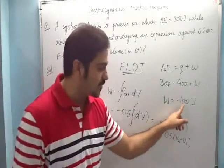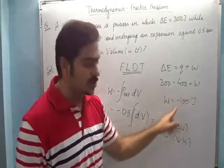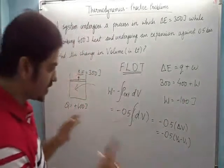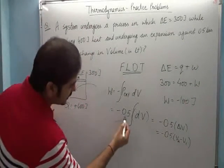So when I multiply delta V by 0.5, I'll get work done. And I've already taken the value of work done as 100 joules. So when I equate these two, delta V will come out. But here there's a very important point about units.